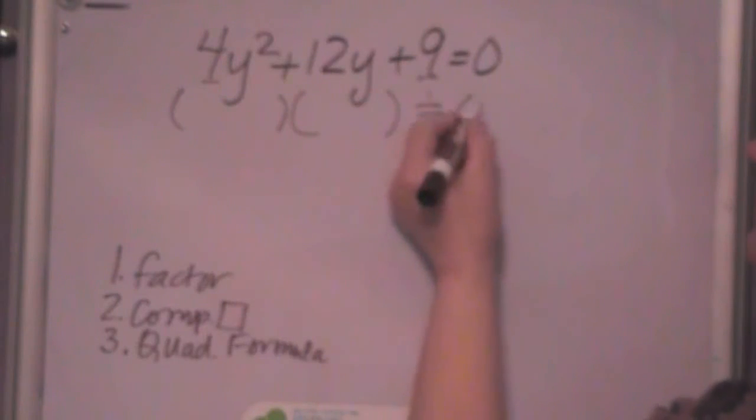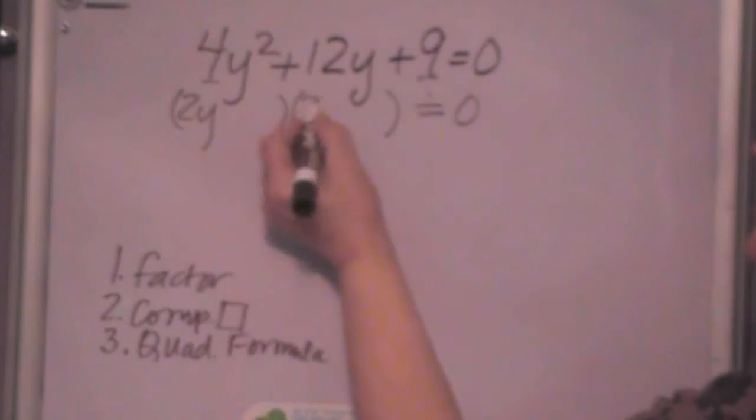If you factored this, you'd put a 2y here and a 2y here and a 3 and a 3. And because everything's positive, it's just 2y plus 3 quantity squared. If you'd recognize that. But it's a little more difficult to recognize than when you have that leading coefficient.